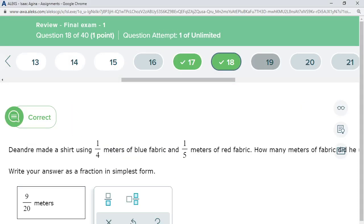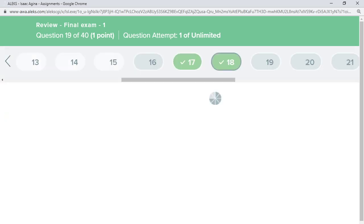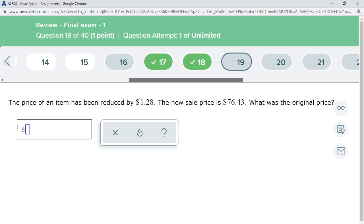So for questions that you can use Desmos, quickly click on Desmos and use Desmos. The price of an item has been reduced by $1.28.